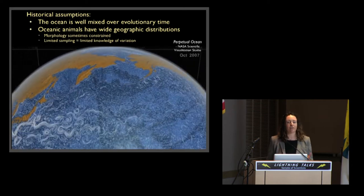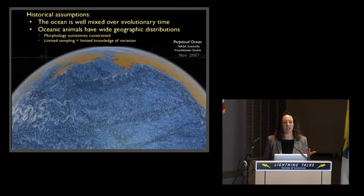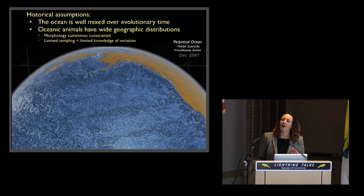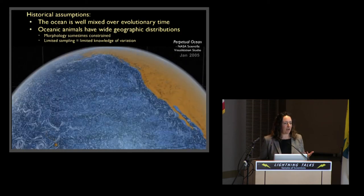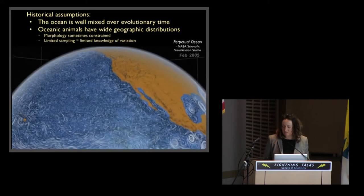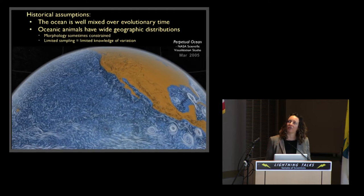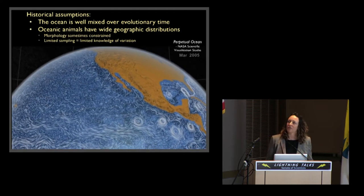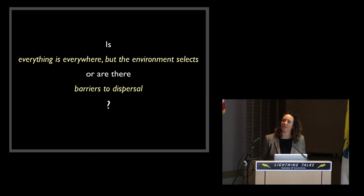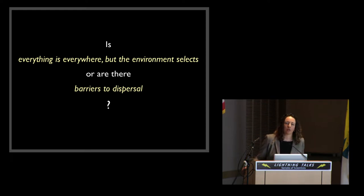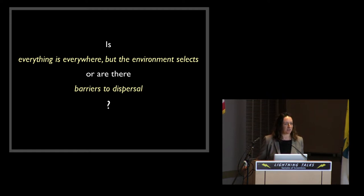This is the largest habitat on earth. It's dynamic. It's changing. We have sampled a very small amount of it, and often when we do, our samples are from very far apart, and so it's hard to see how the variation is. I'm going to borrow a slogan from microbiology: everything is everywhere. Is this the case in the oceans as well, or are there actually barriers to dispersal as we start to look closer?